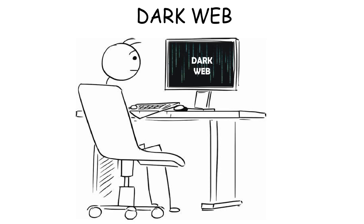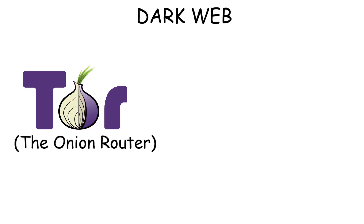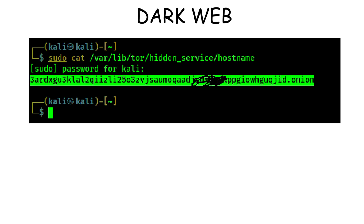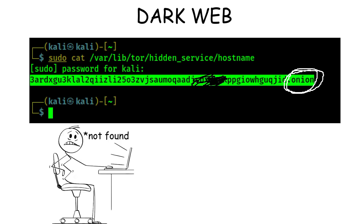The dark web is a small part of the Internet that's hidden and inaccessible from normal browsers and search engines like Google. To access it, you need special tools like the Tor browser, which anonymizes users by directing their connection through many encrypted servers called nodes or relays. Websites here also use .onion domains instead of the usual .com, and you can't find them without knowing the exact address.